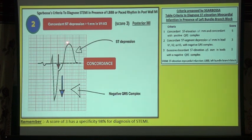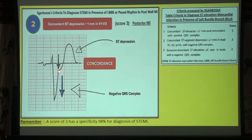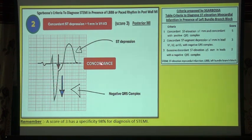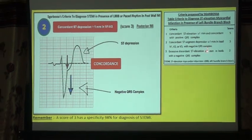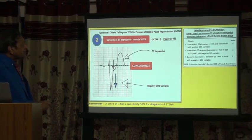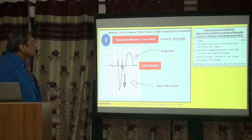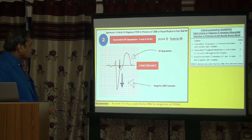Second Sgarbossa criterion in the presence of LBB: if your QRS is below the baseline — negative — and simultaneously your ST depression which is more than 1 mm is also below the baseline — also negative — then both QRS and ST depression are concordantly below the baseline. The T wave is in the opposite direction, above the baseline. This concordant ST segment depression more than 1 mm in leads V1, V2, V3 with a negative QRS complex scores 3 and confirms STEMI.